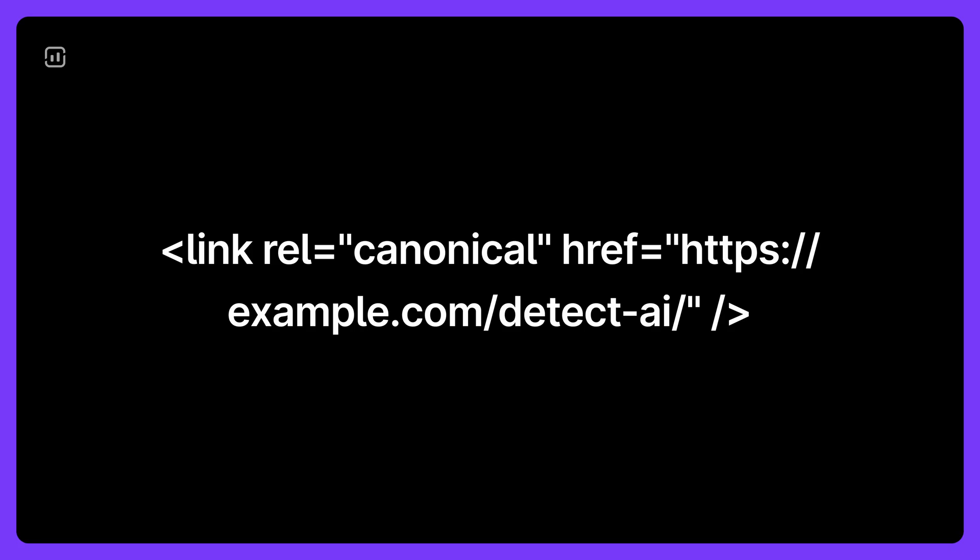Just add a line of code in the head section of your duplicate page's HTML — it looks like this. For example, if you wanted to point to your article on detecting AI content as the original page, you would add this code. This line simply tells search engines that all credit should go to this original URL.